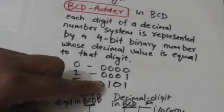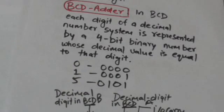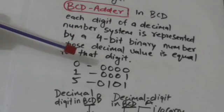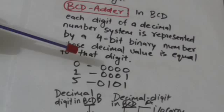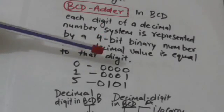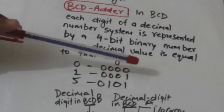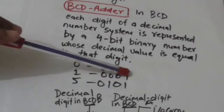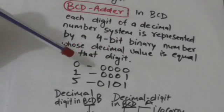In BCD, the decimal digit five is represented by 0101 because the decimal value of 0101 is five. Similarly, the decimal digit one is represented by the four-bit number 0001 because the decimal value of this four-bit number is 1.